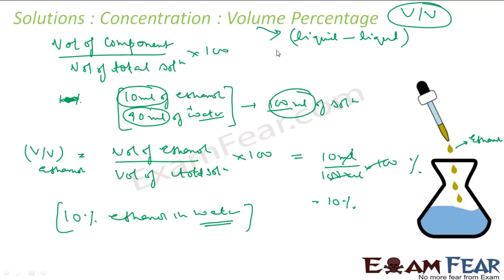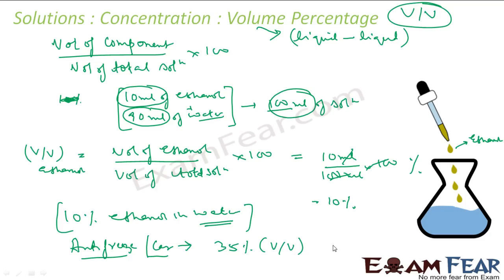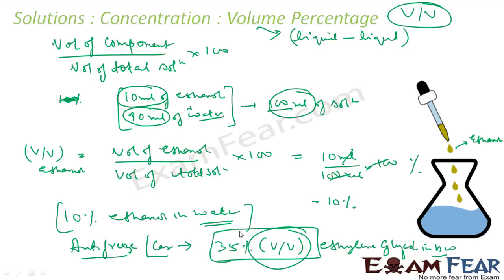One application where volume percentage is used is anti-freeze in car radiators in cold countries, to reduce the freezing point. Anti-freeze is a 35% V by V solution of ethylene glycol, which lowers the freezing point of water to minus 17.6 degrees Celsius.